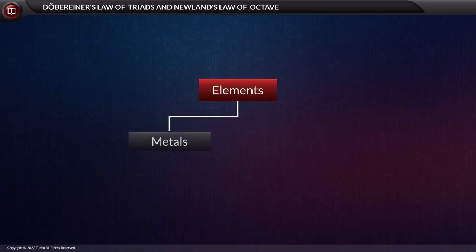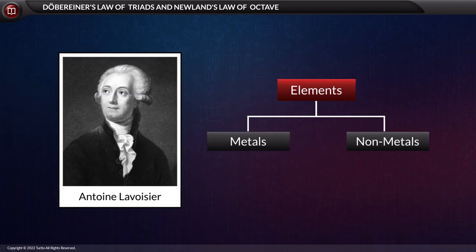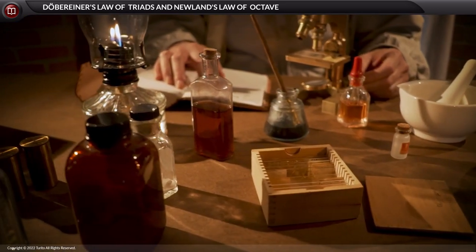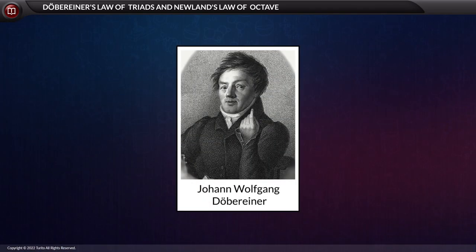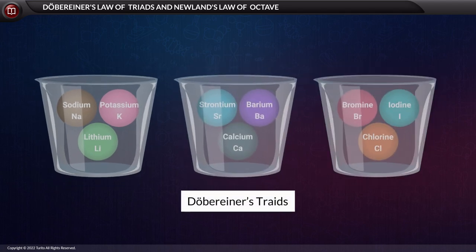The first type of classification of elements was into metals and non-metals, and this was done by Antoine Lavoisier. In the earliest phase of the 19th century, a scientist named Döbereiner observed a periodic trend among certain elements for the first time. He arranged elements in groups of three based on similarity in their chemical and physical properties.